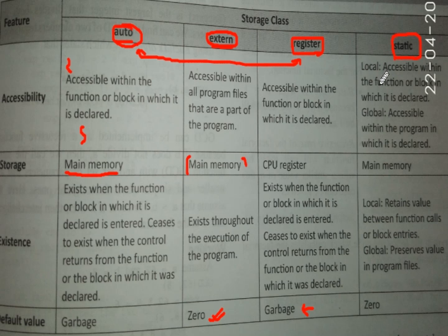The most important storage class is static. Its accessibility can be local — accessible within the function or block in which it is declared — or global, accessible within the entire program in which it is declared. If declared locally it is visible only locally; if declared globally, outside the main function, it is visible to all parts of the program. Its storage is in main memory, it retains its value between function calls and block entries, and its default value is 0.